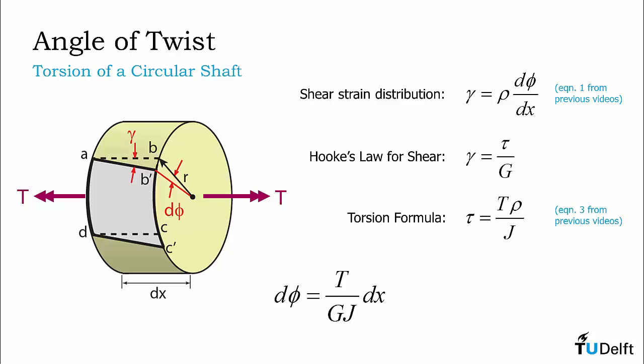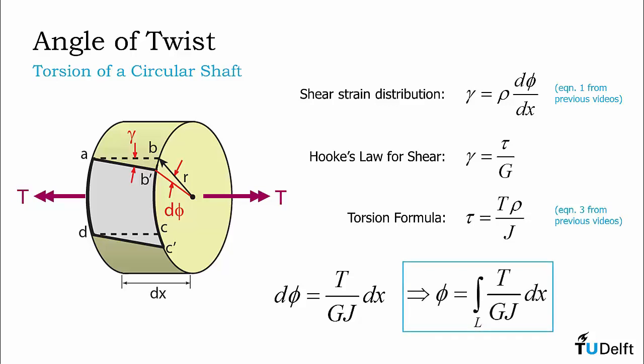Finally, we need to remember that the overall angle of twist for a shaft is the infinite sum or integration of all the d-phi's along the length of the shaft. Thus, the overall angle of twist for a circular shaft is the integration over the length of the shaft of the internal torque divided by the product of the shear modulus and polar moment of inertia of the shaft, multiplied by the infinitesimal segment length dx.